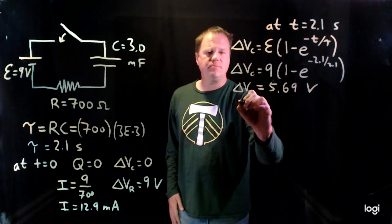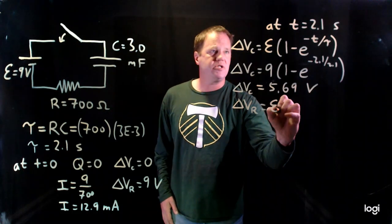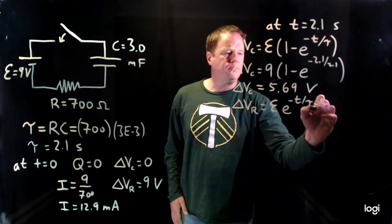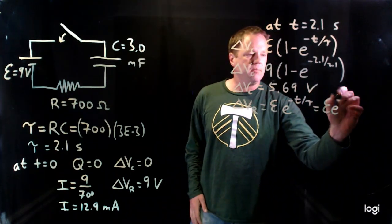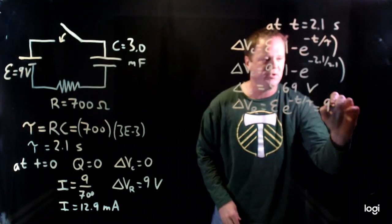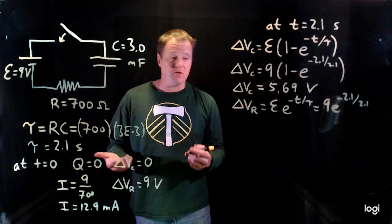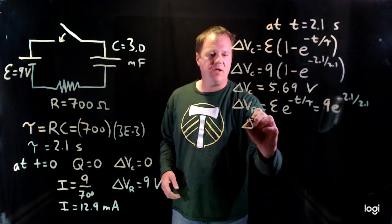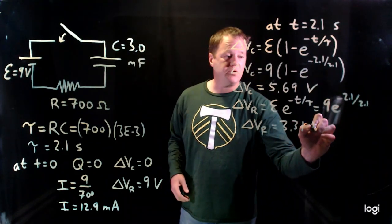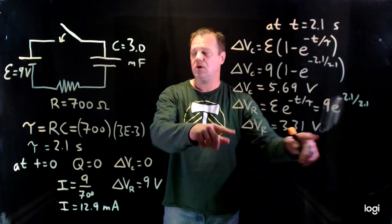We can calculate the voltage across the resistor using its formula. It looks fairly similar — we just don't have that (1 − ) term. It's the battery voltage times e^(−t/τ). Throwing in the numbers: 9 volts × e^(−2.1/2.1), and from the calculator the voltage across the resistor equals 3.31 volts. You might notice that 5.69 + 3.31 = 9 volts — they always should add up to the battery voltage, as Kirchhoff's voltage law tells us.